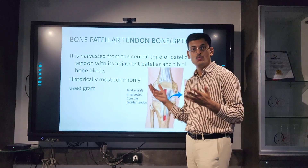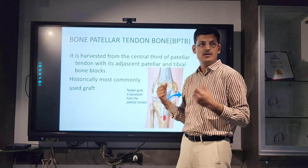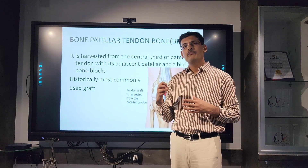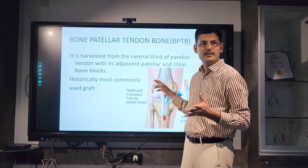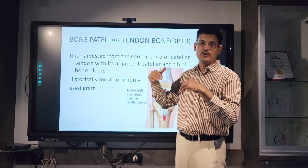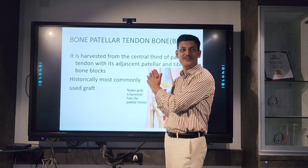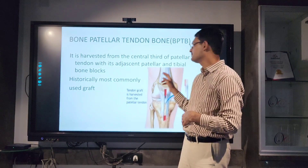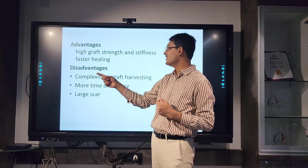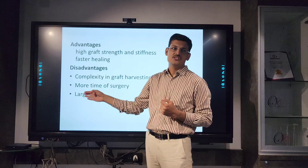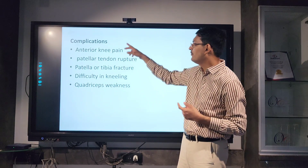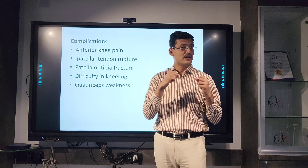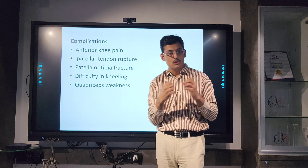BTB tendon is basically the old gold standard, still used by senior surgeons. It is a very good graft — very rigid, very good bone-to-bone fixation. The only problems are donor site morbidity, anterior knee pain in some patients, difficulty with hardware, and risk of patellar fractures. When I was a fellow, my boss used to do only BTB, and I was trained in BTB before adapting to hamstring based on practical results. BTB has higher graft strength, stiffness, and faster healing, but harvesting takes more time, leaves a large scar, and causes anterior knee pain — which is why it is no longer the preferred first choice.